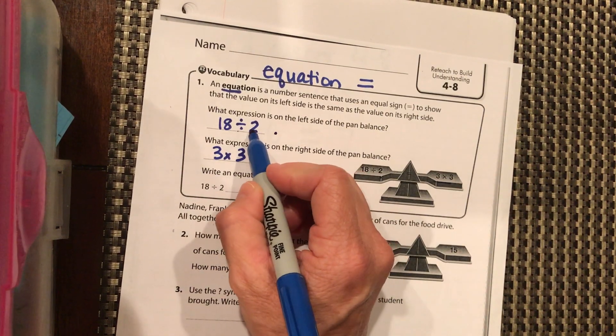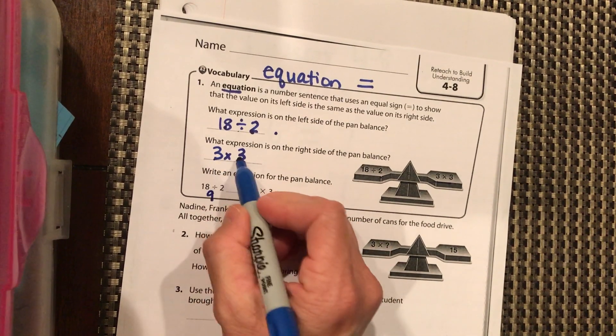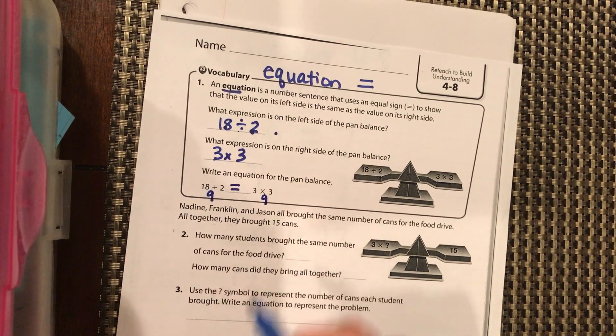So 18÷2, you're asking yourself what times 2 equals 18, and that's 9. And then 3×3 is 9.